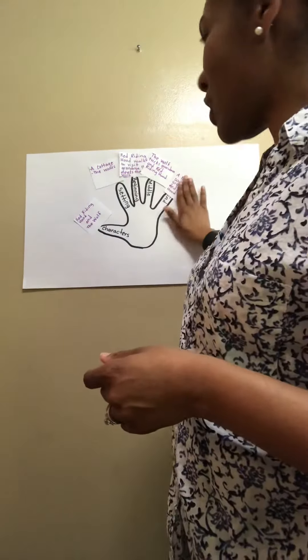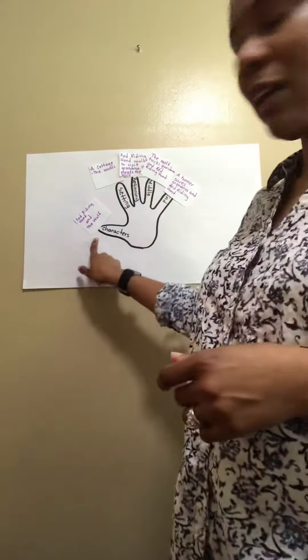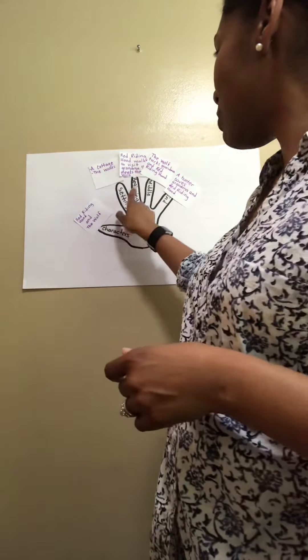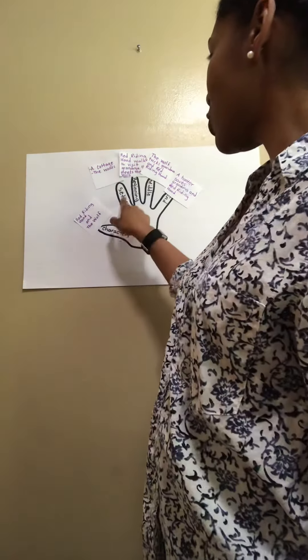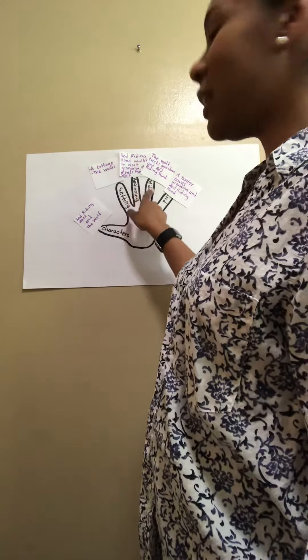That was a great job. We have character, setting, beginning, middle, and end. Use this strategy in your reading, and I hope that you can do it on the next slide. Think about everything that we discussed and I want you to match up Red Riding Hood and all the pieces: character, setting, beginning, middle, and end.